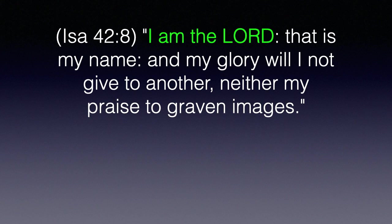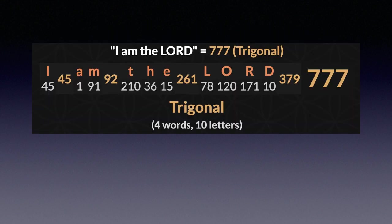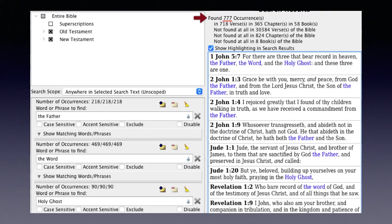Let's go to Isaiah 42:8: 'I am the Lord, that is my name, and my glory will I not give to another, neither my praise to graven images.' Using the trigonal cipher, 'I am the Lord' has a value of 777. All three-digit repunit numbers are multiples of 37, and 777 is 37 times 3 times 7. In 1 John chapter 5, verse 7, the phrases 'the Father,' 'the Word,' and 'the Holy Ghost' combine for 777. For more about the number 7 patterns throughout the King James Bible, go to the YouTube channel Truth is Christ.